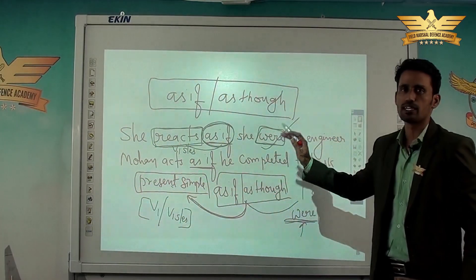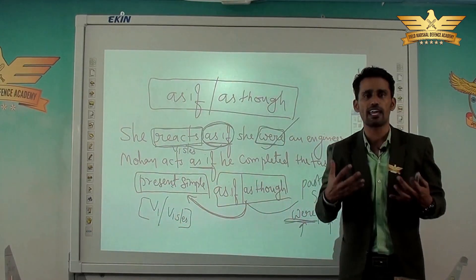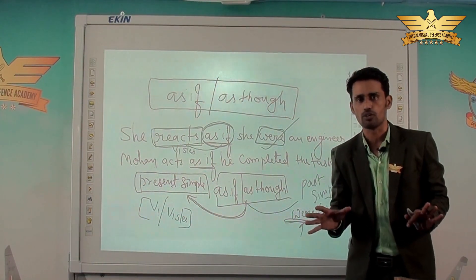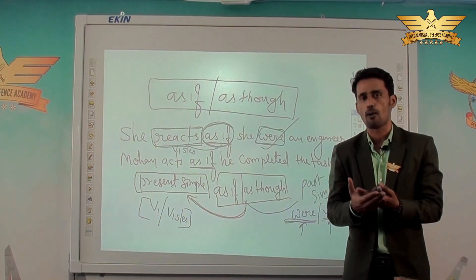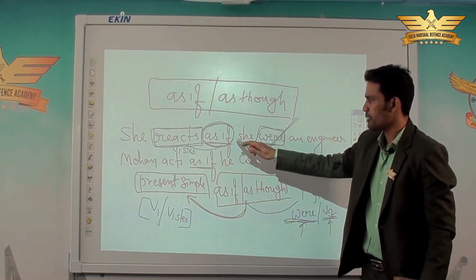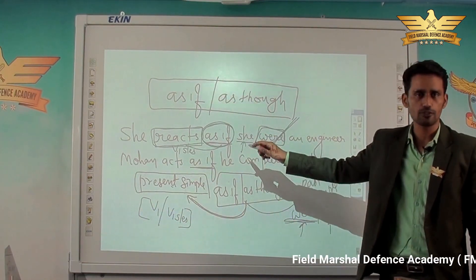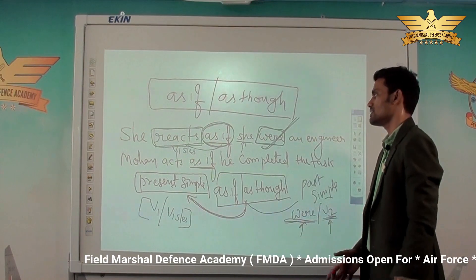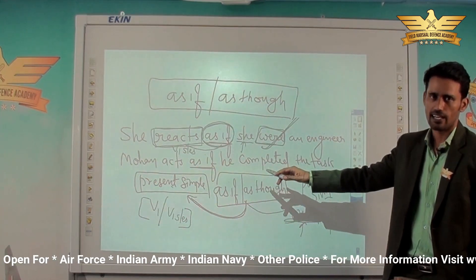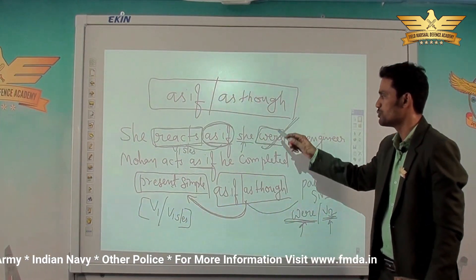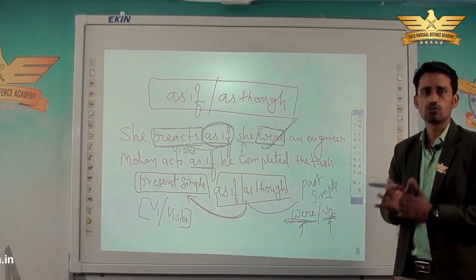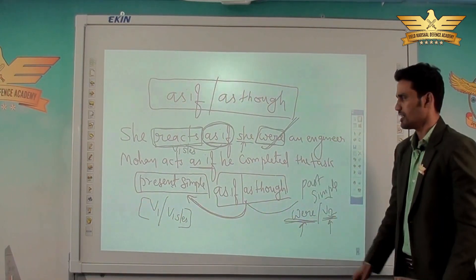Since 'as if' is preceded by present simple tense, it must be followed by past simple tense. There is no action here — saying 'I am a teacher' is a complement, not an action, so we use the 'to be' form. That is why we use 'were' here. Even though the subject 'C' is singular, we use 'were' — not 'was' — because 'was' is not allowed in suppositional sentences.